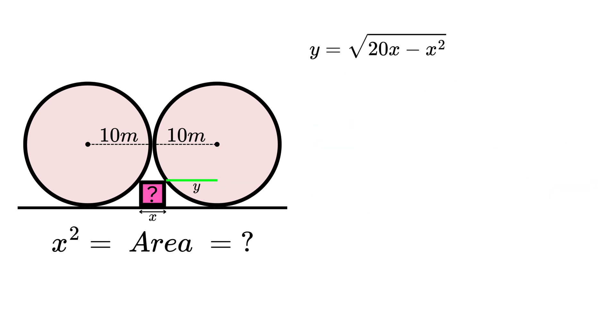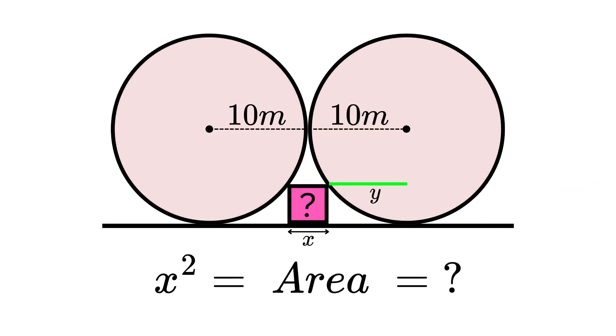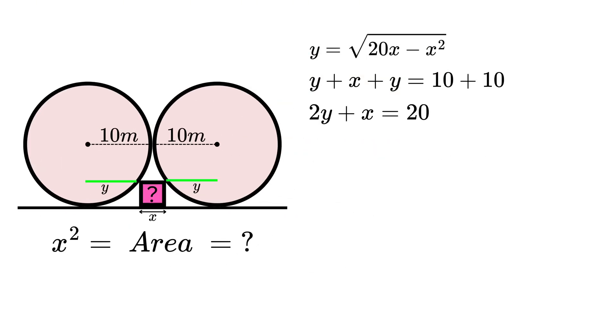If we draw another y line in the opposite direction on the other corner of the square, we can see that y + x + y = 10 + 10. We can simplify our expression and substitute in the value for y that we just found. Our equation in terms of x now reads 2√(20x - x²) + x = 20.